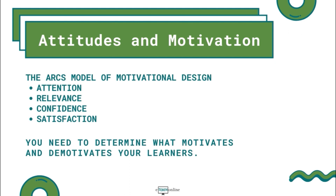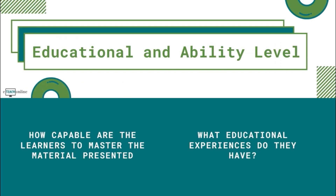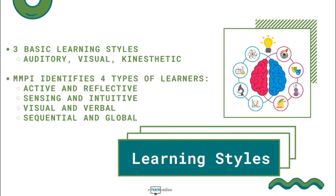Educational and ability level information can be gathered through interviews, observations, records, and test data. Questions may include: How able are the students to learn the new material? What educational experiences do they have? Learning styles refers to how individuals learn best. The three basic learning styles are auditory, visual, and kinesthetic. Today there are well over 40 different models used for describing learning styles. Most models are derived from the Minnesota Multiphasic Personality Inventory, or MMPI, used by medical professionals since the 1930s to diagnose mental disorders and identify personality structure.